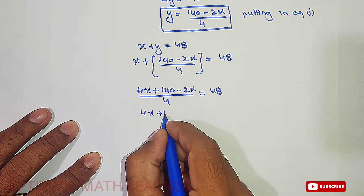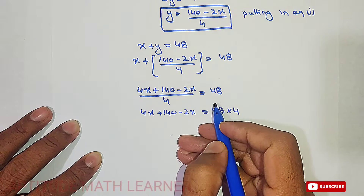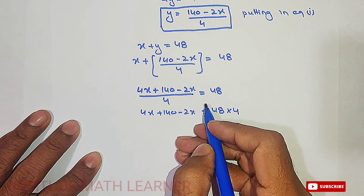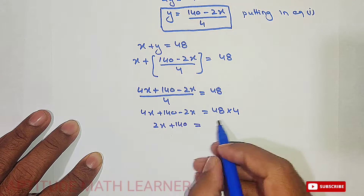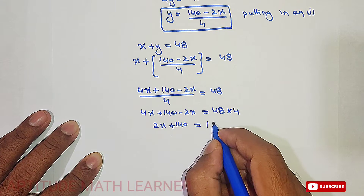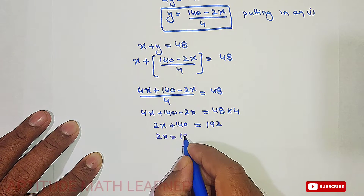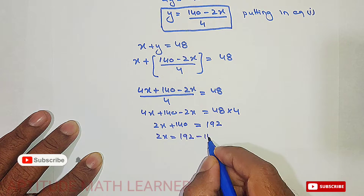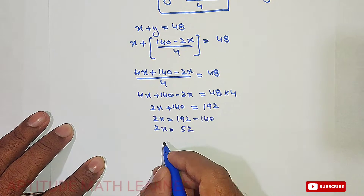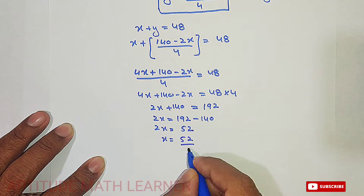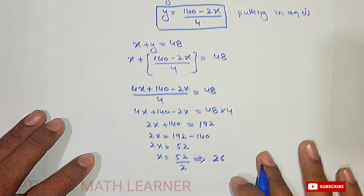Multiplying both sides by 4: 4x plus 140 minus 2x equals 192. Simplifying, 2x plus 140 equals 192, so 2x equals 192 minus 140, which gives 2x equals 52, and therefore x equals 52 divided by 2, giving x equals 26.